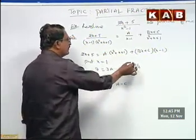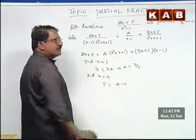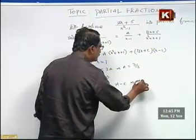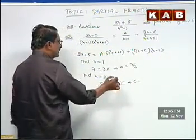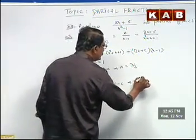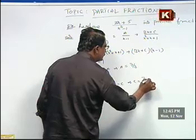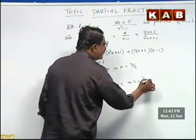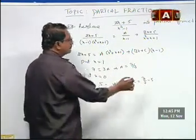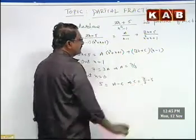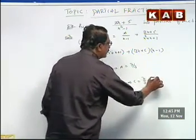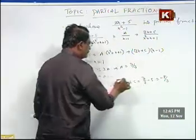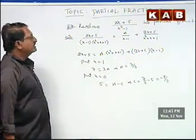The value equals to 5. But the value of A equals to 7 by 3. Substituting A equals to 7 by 3, we get C equals to A minus 5, that is 7 by 3 minus 5. Taking LCM we get 7 minus 15 by 3, which equals minus 8 by 3. So the value of C equals to minus 8 by 3.